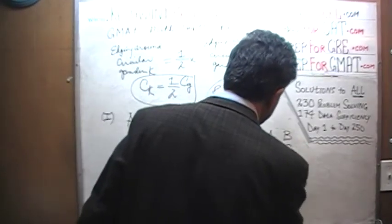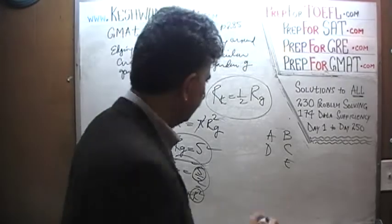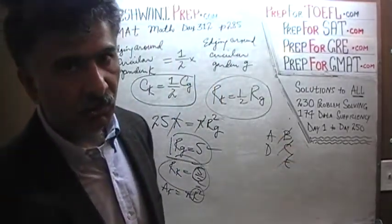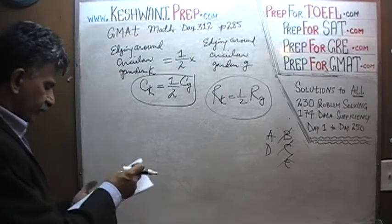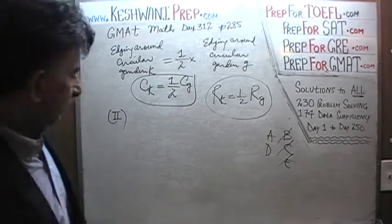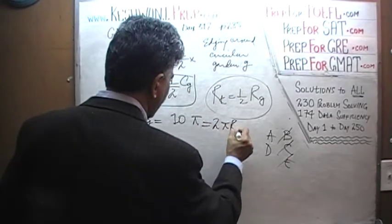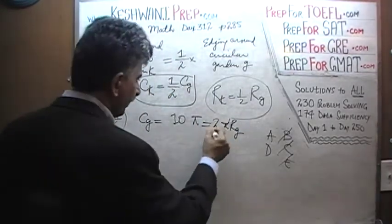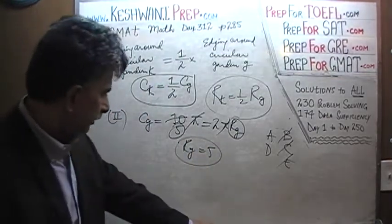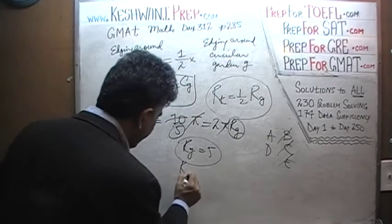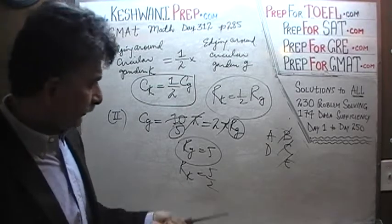Now that we established the first statement is sufficient, the answer cannot be B, C, or E — it would have to be A or D. In the second statement, they tell us that the circumference of circle G is 10π. Circumference = 2πr_G = 10π; divide both sides by π and the radius of G is 5. Once we know the radius of circle G, we can figure out the radius of circle K — which is 5/2. And once we know that, we can figure out the area of K. The second statement by itself is also sufficient. The answer is D.